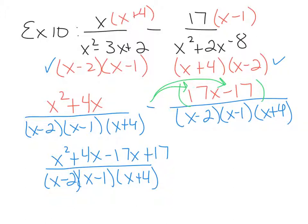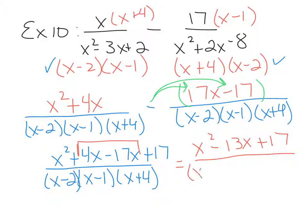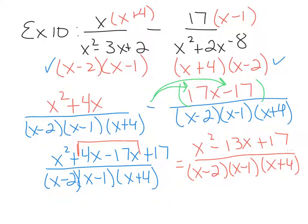If you do not distribute the negative sign when there are multiple terms behind it, you will end up with wrong signs. Combining like terms in the numerator gives x squared minus 13x plus 17 over x minus 2, x minus 1, x plus 4. The next step is to try to factor the numerator to see if any binomials cancel. However, the only factors of 17 are 17 and 1, and there are no factors of 17 that add to make negative 13, so this trinomial is prime — no reducing is possible. This is our final answer.